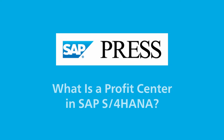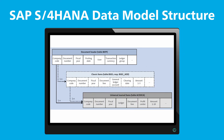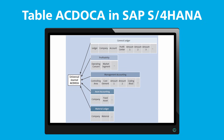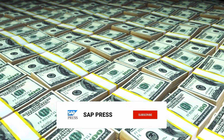In classic SAP ERP, profit centers lived in the controlling module, separate from financial accounting. But in SAP S/4HANA, that's changed. With the new general ledger in SAP S/4HANA Finance, profit centers play a bigger role. They're now tightly integrated into financial accounting, used to meet segment reporting requirements.